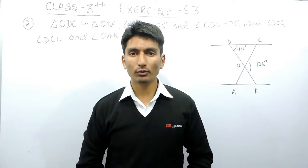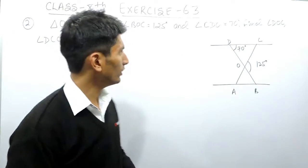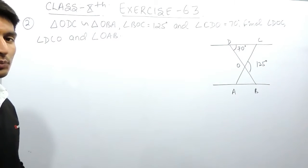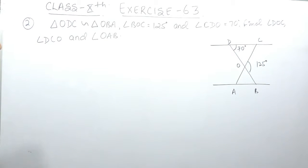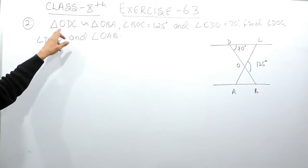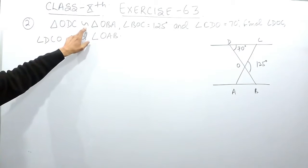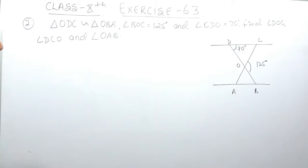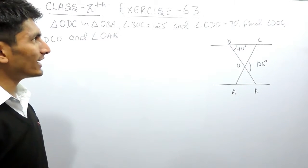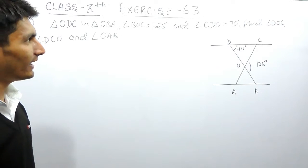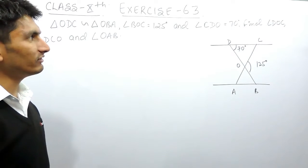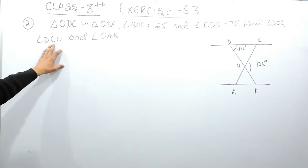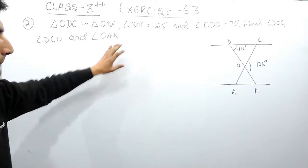Hello everyone, we are from True Maths and in this video we are going to solve question number 2 of exercise 6.3. The question says triangle ODC is similar to triangle OBA, angle BOC is given as 125 degrees, angle CDO is given as 70 degrees, and you have to find angle DOC, angle DCO, and angle OAB.